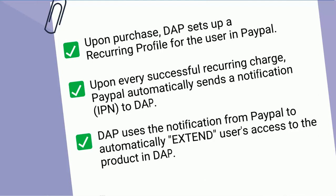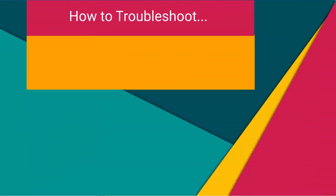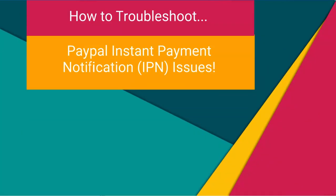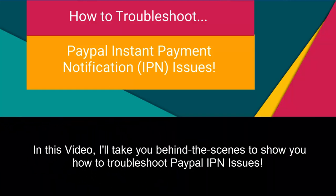Sometimes, even though a payment goes through successfully in PayPal, for some reason it does not connect to the membership platform. As a result, access does not get extended and users prematurely lose access even though they made the payment. It doesn't happen all the time, but sometimes it does — so what are your options, how can you figure out what happened, and how can you troubleshoot this problem? That's exactly what I'm going to show you in this video.